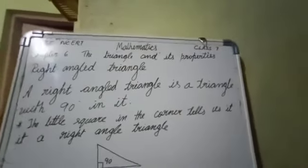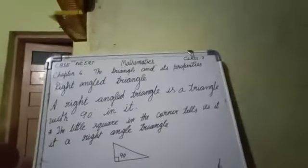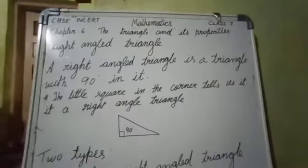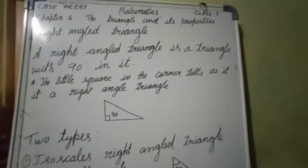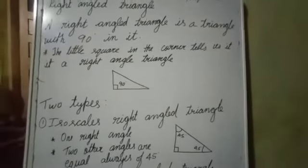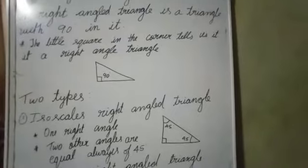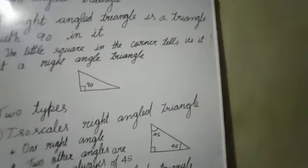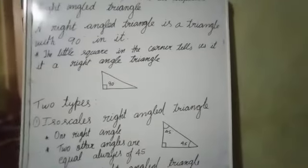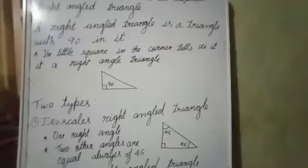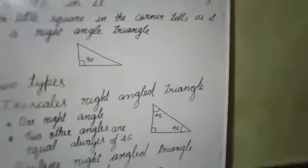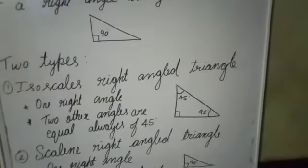This is one of the right angle triangles. But in the right angle triangle, there are two types. The first one is isosceles. An isosceles right angle triangle means one right angle will be there and the other two angles are equal — they always measure 45 degrees each.